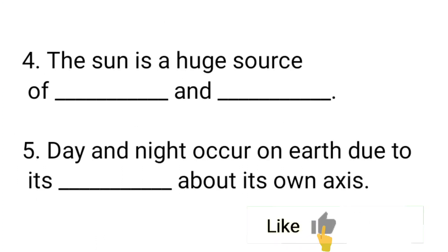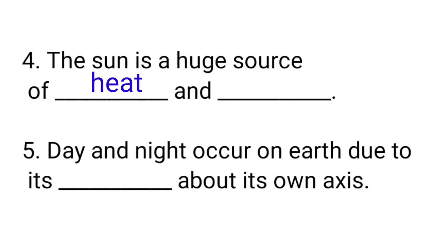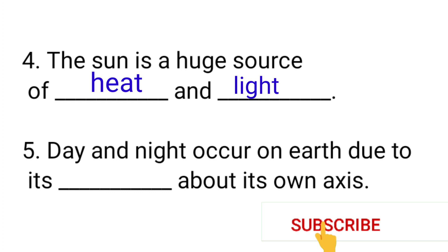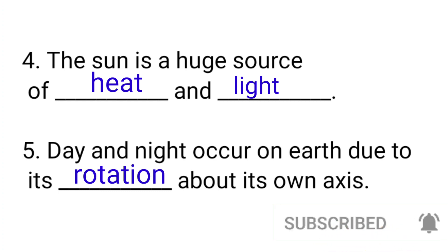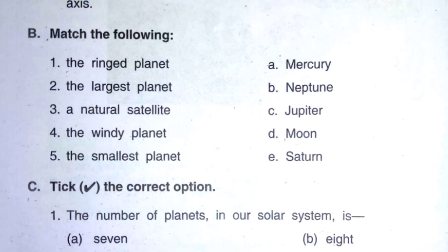4. The Sun is a huge source of heat and light. 5. Day and night occur on Earth due to its rotation about its own axis.